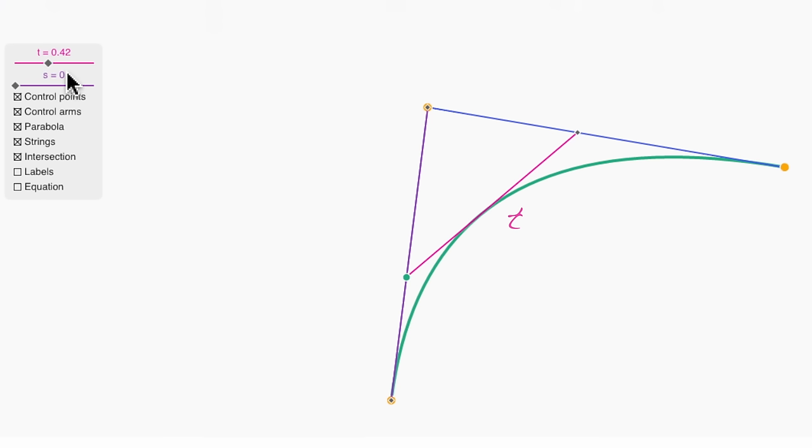The method I'm going to use to find where the touching point occurs seems a little bit sneaky at first, but it's the simplest method I know. And what I'm going to do is introduce another string art line, this one controlled by a parameter s.